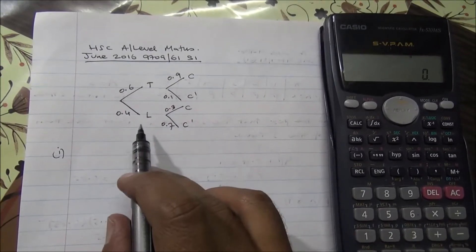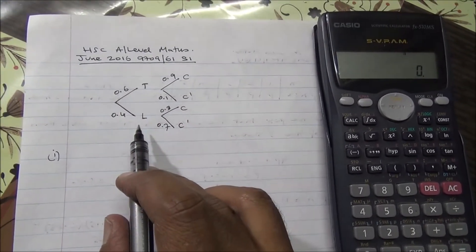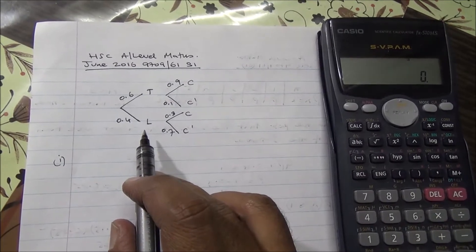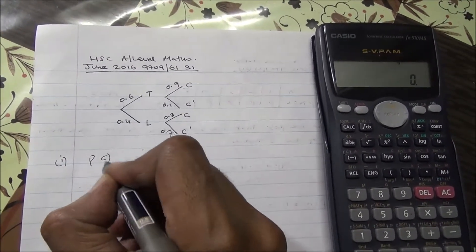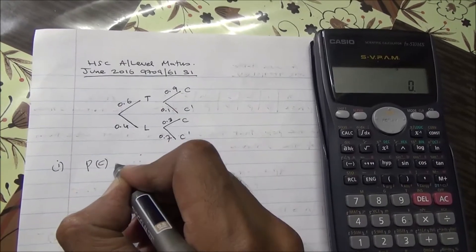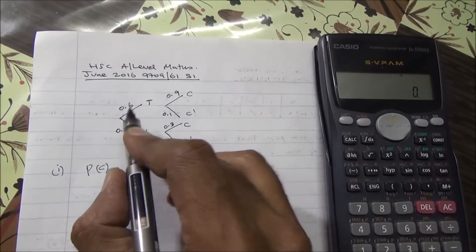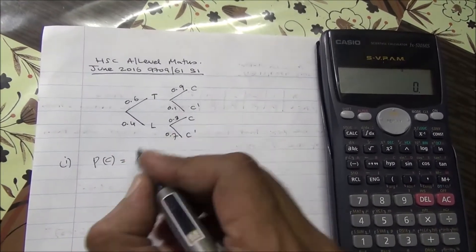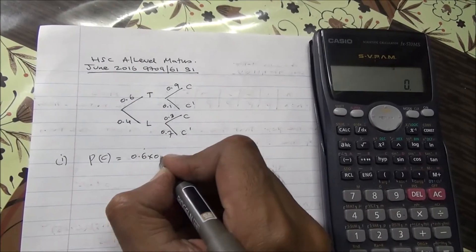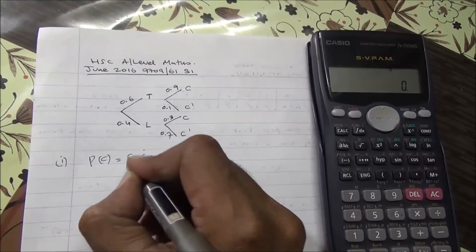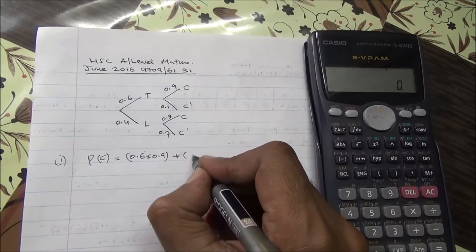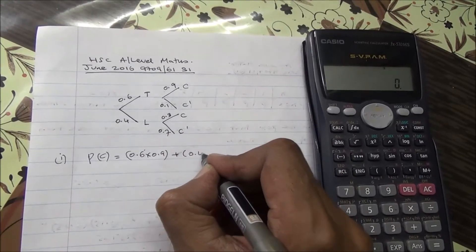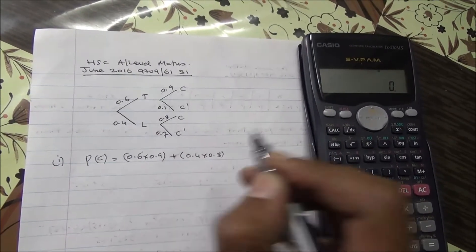To be able to do this question, I've drawn a tree diagram. We need to find the probability that Sam gets a cup of coffee — denoted by P(C). That's going to be: on time and then a cup of coffee, so 0.6 times 0.9, plus late and then a cup of coffee, so 0.4 times 0.3.